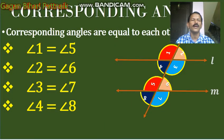Now, corresponding angles. Corresponding angles are equal to each other. Angle 1 is equal to angle 5, angle 2 is equal to angle 6, angle 3 is equal to angle 7, and angle 4 is equal to angle 8. You can identify them easily because I have given the same colors to each corresponding pair.